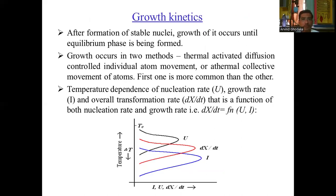Growth kinetics: after formation of stable nuclei, growth occurs until the equilibrium phase is formed. Growth occurs by two methods: thermally activated diffusion-controlled individual atom movement, or athermal collective movement of atoms — the first being more common. The overall transformation rate dx/dt is a function of both nucleation rate U and growth rate I. The graph shows nucleation rate U, growth rate I, and overall transformation rate dx/dt plotted versus temperature (undercooling ΔT).